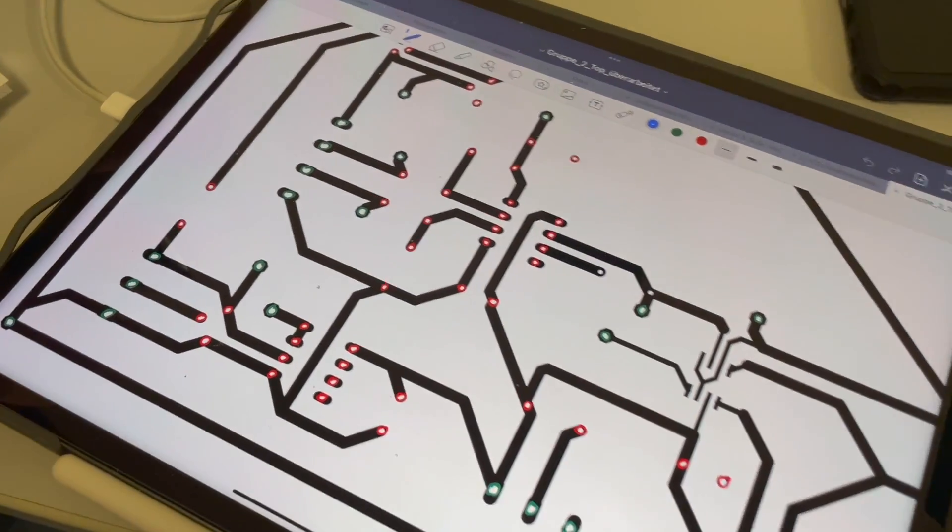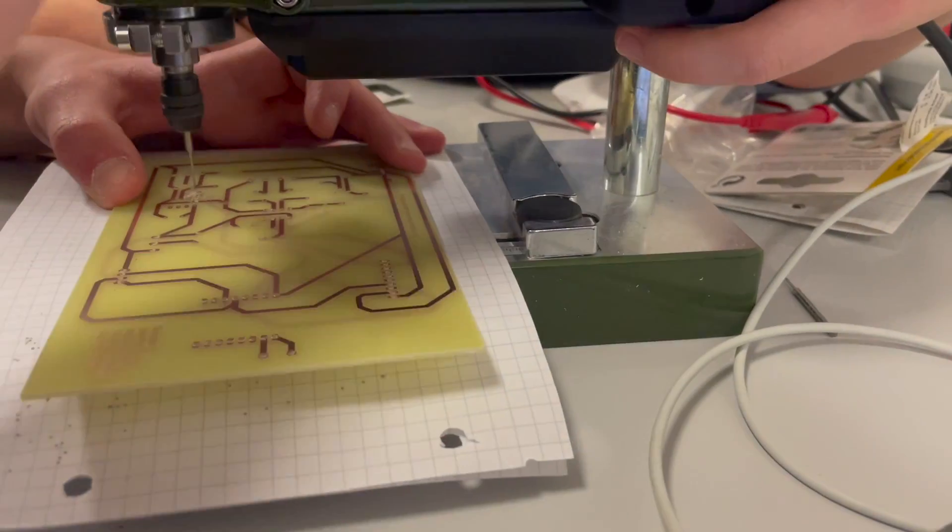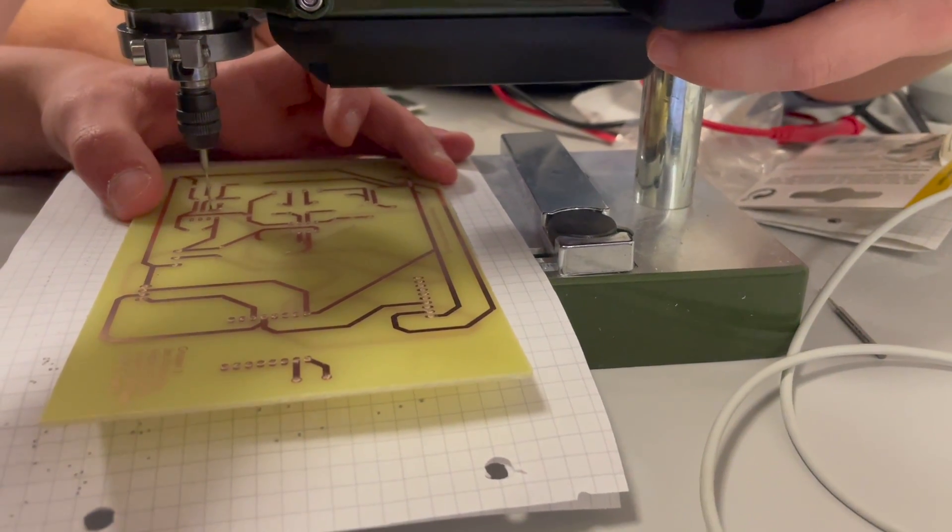To do this it can help to mark all the holes on your layout in a certain color code to drill all the holes in the right diameter.